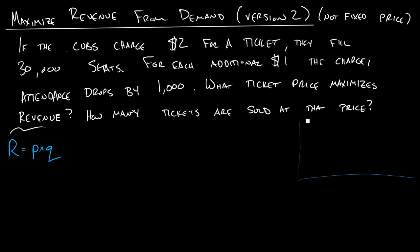So let's think about our point-slope form of a line. And why can we do this? Well, the way they talk about the attendance dropping for each additional dollar, that's a constant change, and so we know it's a linear relationship.